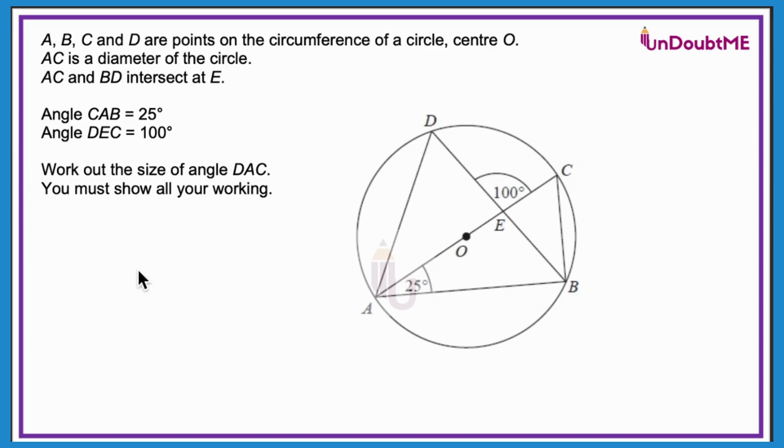You can read the question from the screen. I will just directly tell you what to do in this. Firstly, the important thing is that AC is a diameter. Okay, so since it is a diameter, we can say that this angle will be 90 degrees. Angle in a semicircle is 90 degrees.